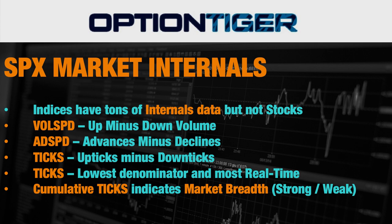What I want to talk about today is the SPX market internals. The advantage with the SPX is it's an index made up of component stocks. In the case of the S&P 500, we have 500 stocks going into the index. One internal available is the WSPD, which tells you the up minus down volume of all the stocks in the S&P — any stock that's up, that volume is counted as up volume, and any stock that's down, it's counted as down volume.